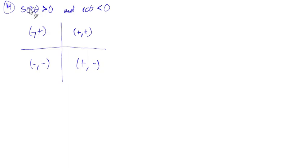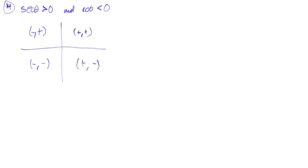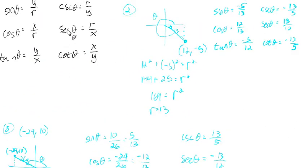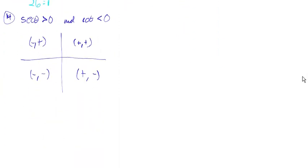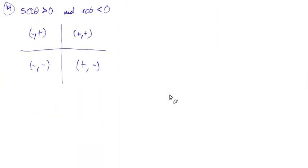The other piece of information is that the secant of theta is greater than 0. The secant is r over x. r is always going to be positive, but x could be positive or negative. When we take r over x, we have to wind up with a positive value, so x has to be positive. Therefore, we must be in quadrant 4.